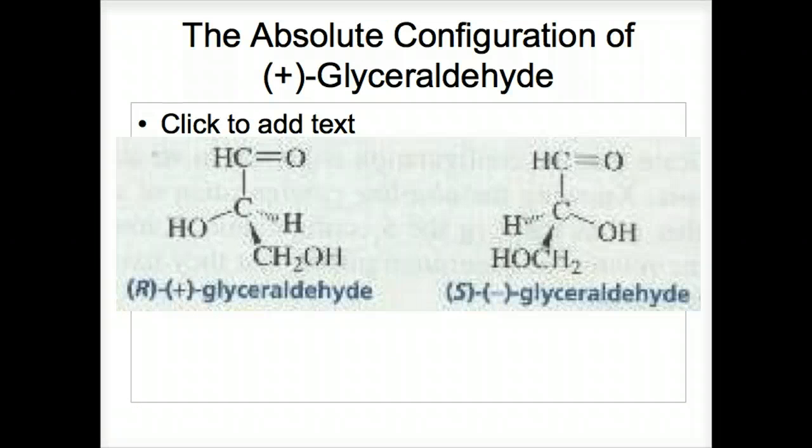Since glyceraldehyde, shown here on the slide, has one asymmetric carbon, it has two stereoisomers, R and S. Chemists found that it has both the R and S configuration as early as 1951.